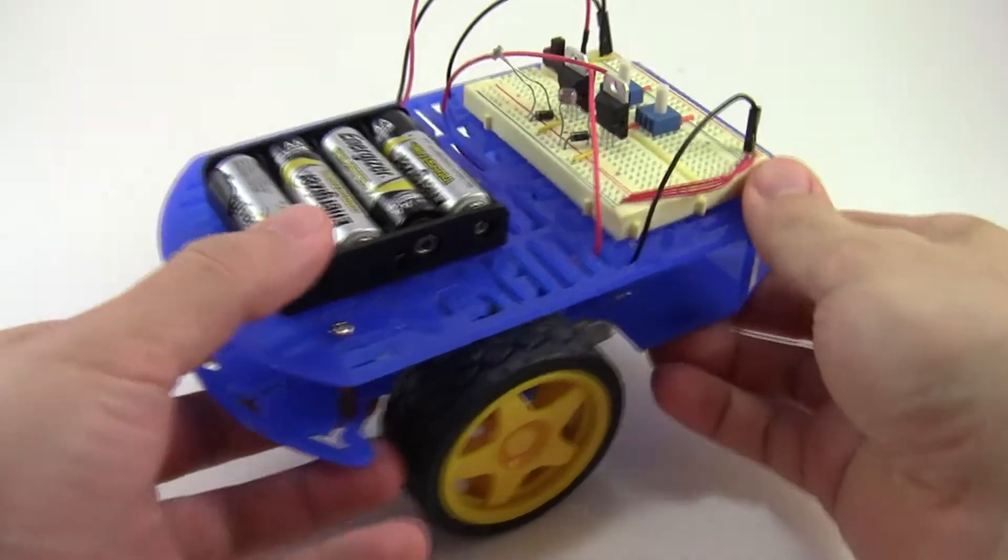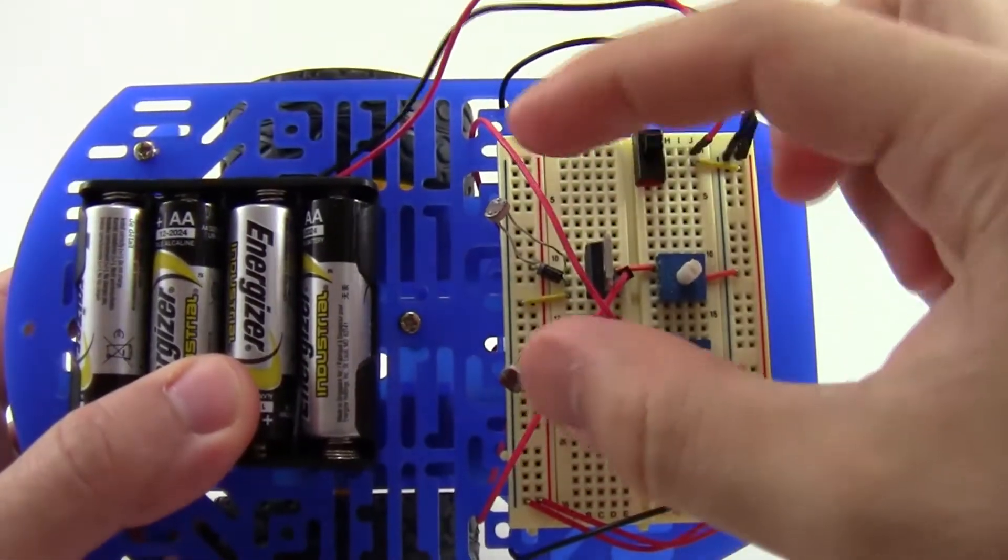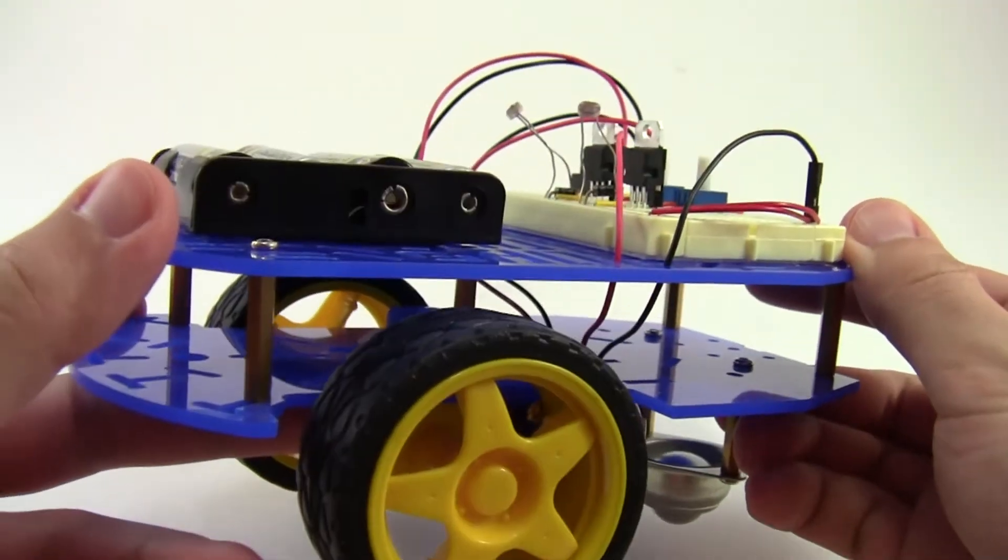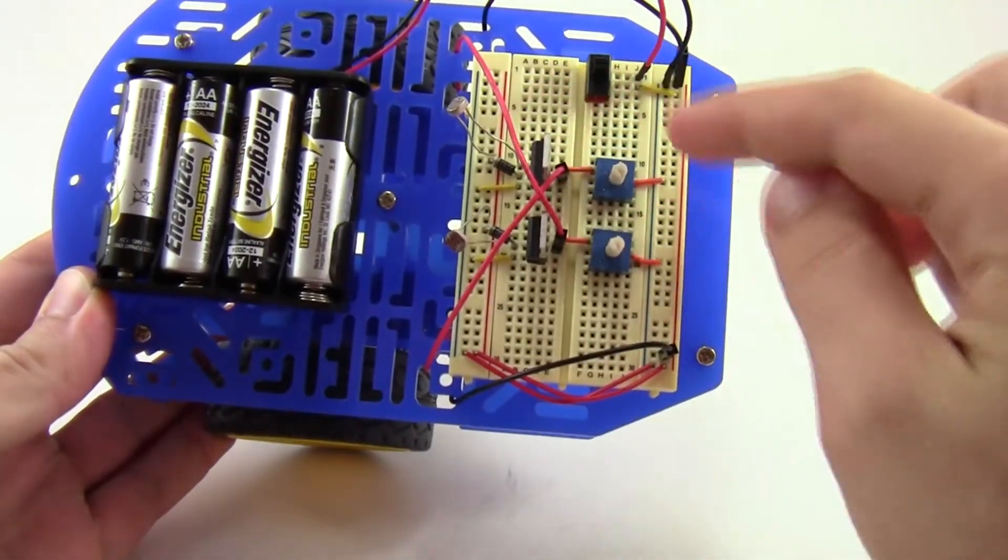Just how does the robot work? It has two light sensors mounted on the top that stick up like little antennae or eyes. These light sensors are connected to a circuit that control the robot's motors.